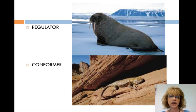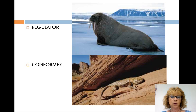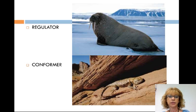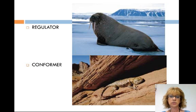A regulator is an animal that uses mechanisms of homeostasis to moderate internal changes in the face of external fluctuations. Conformers allow some conditions within their body to vary with certain external changes. For example, crabs live where salinity is pretty stable. If placed in an environment of varying salinity, they will lose or gain water to adjust, and this may result in their death. Most organisms regulate in some areas and conform in others.